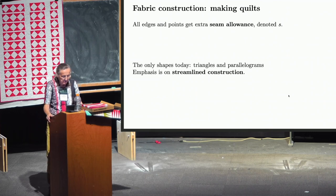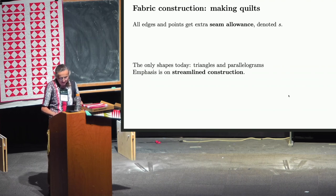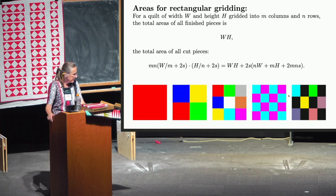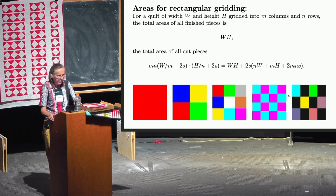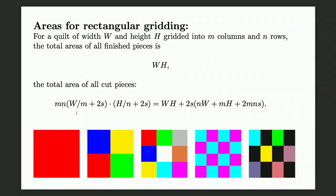Today I'll only talk about triangles and parallelograms. As a mathematician, I like to do things fast and use math. We start with simple rectangular grids: you have some area of width w and height h that you want to divide into m columns and n rows. What you will see at the end is w×h, but each piece has finished size (w/m)×(h/n). When you cut them, you have to add double seam allowance on each side, so the total area of cut pieces increases as n and m get larger.